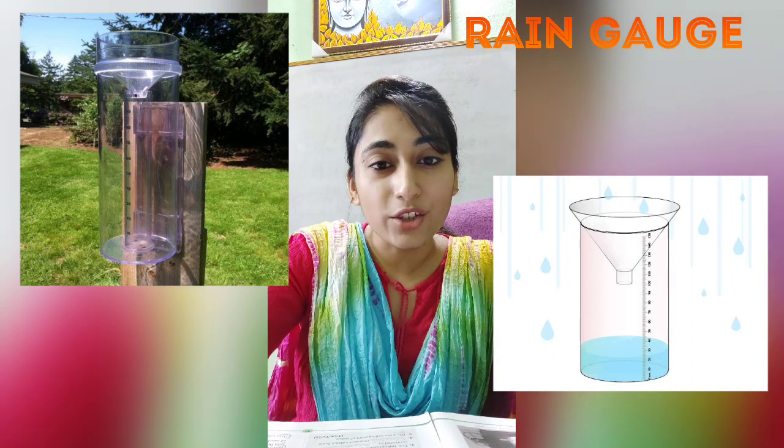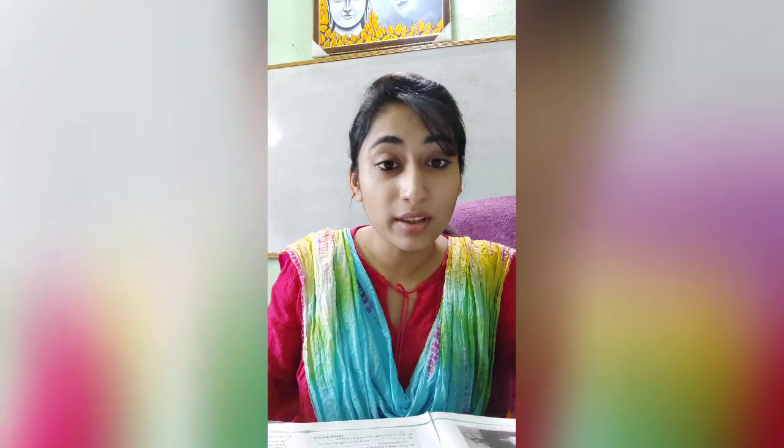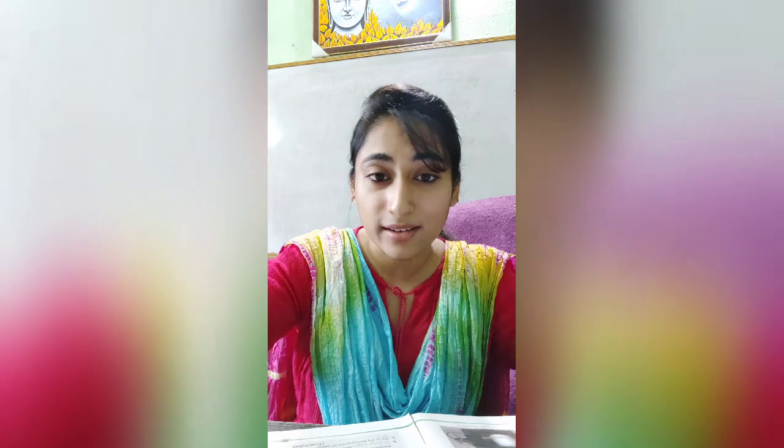All the places on earth having the same amount of rainfall are connected by a line called the iso heights. Please underline it — it is on page number 33. Iso heights are lines on the map that join the points having the same amount of rainfall in a given period. So the distribution of rainfall is shown by iso heights, like how in the previous class we studied about isotherms. Isotherms are lines joining all the places on the map having the same atmospheric temperature. In the same way, iso heights are lines on the map drawn to connect all those places having the same rainfall.